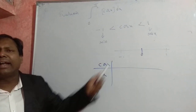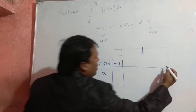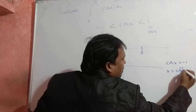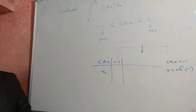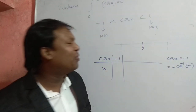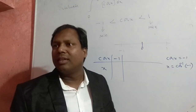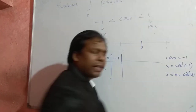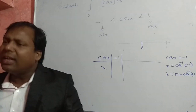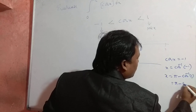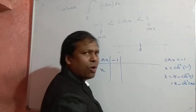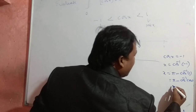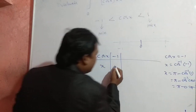When cos x = -1, we solve for x. Using the inverse formula: cos⁻¹(-θ) = π - cos⁻¹(θ), we get x = π - cos⁻¹(1). Since cos(0) = 1, this gives x = π - cos⁻¹(cos 0) = π - 0 = π. So when cos x = -1, x = π.